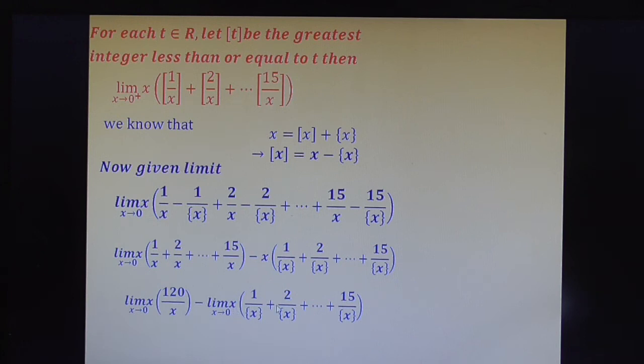So x into finite, here x tends to 0, 0 into finite, this gives 0. Here x and x gets cancelled, we get 120. Therefore here 120 minus 0 equals 120. So answer for this question is 120.